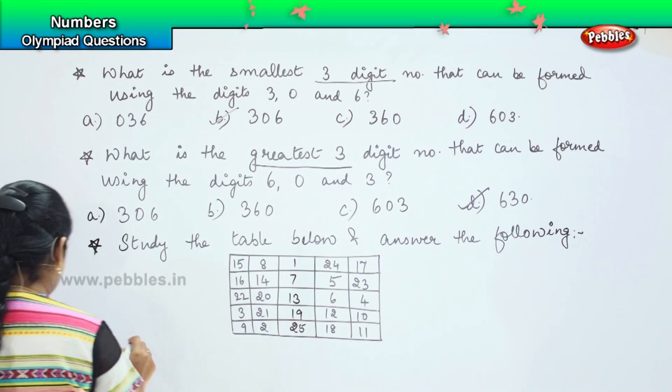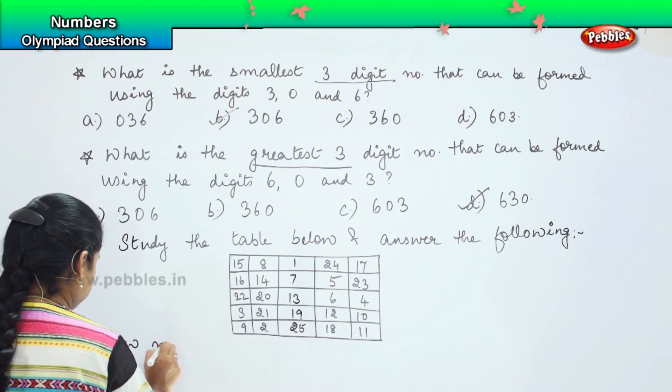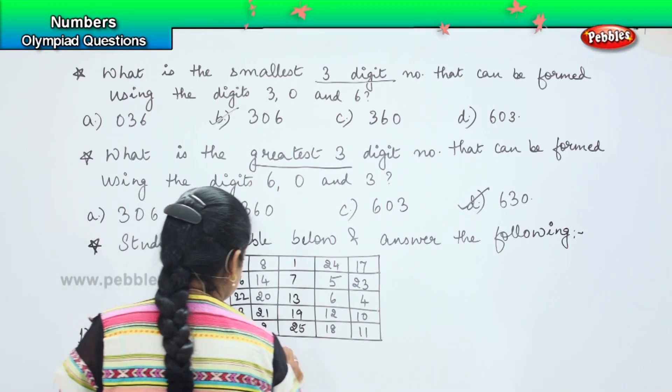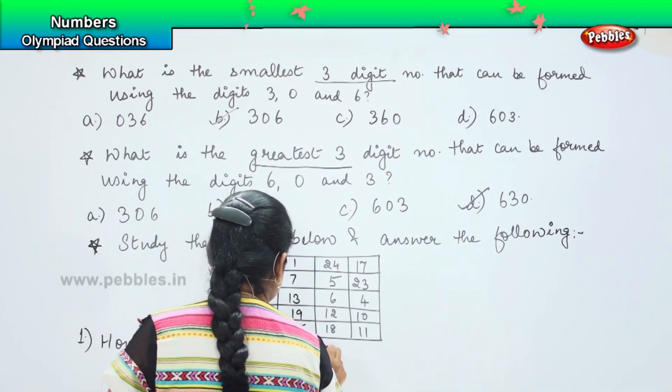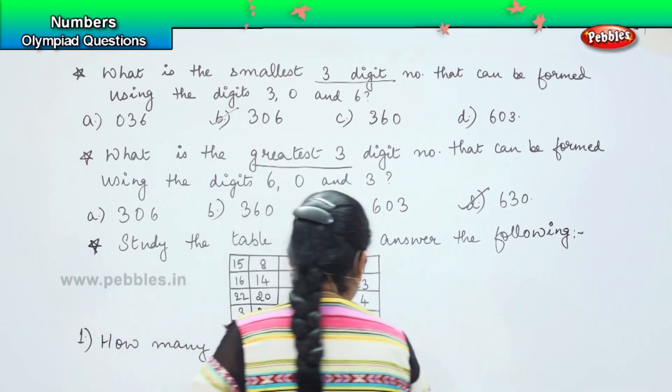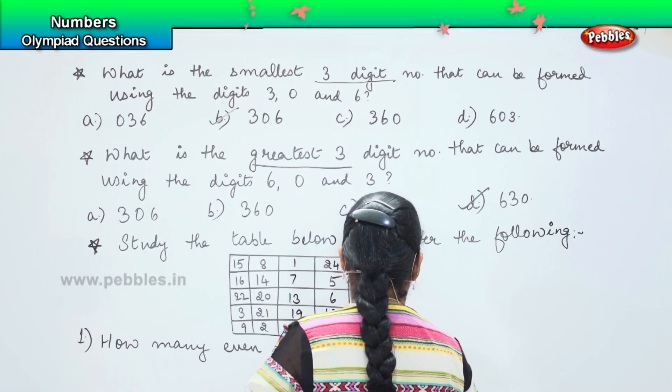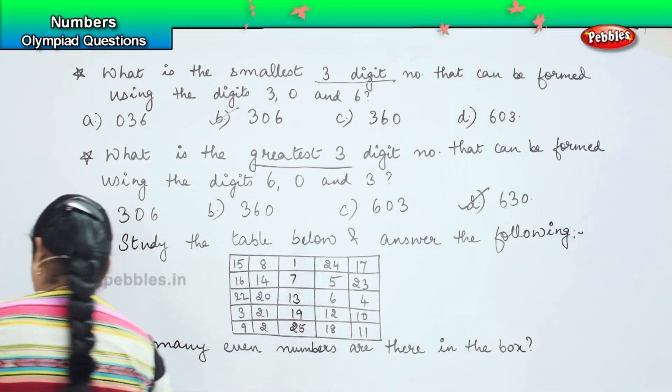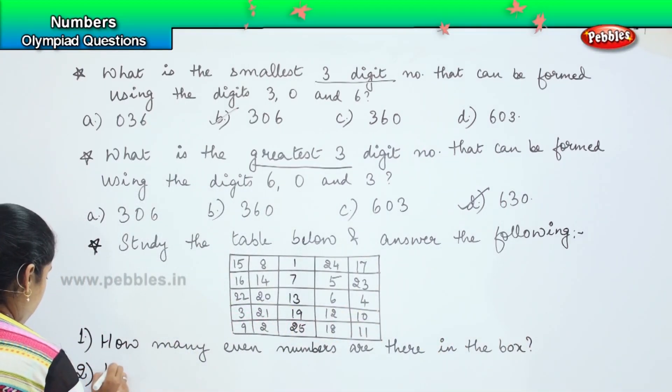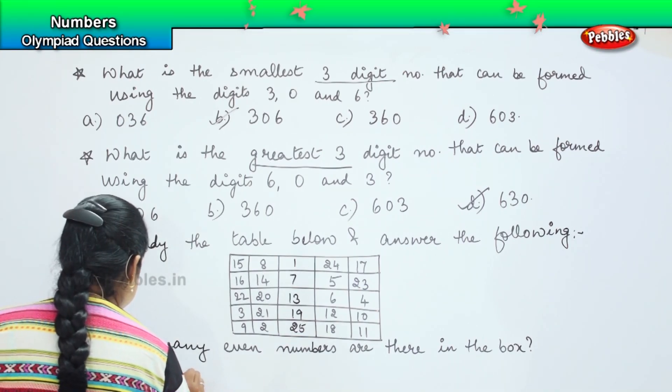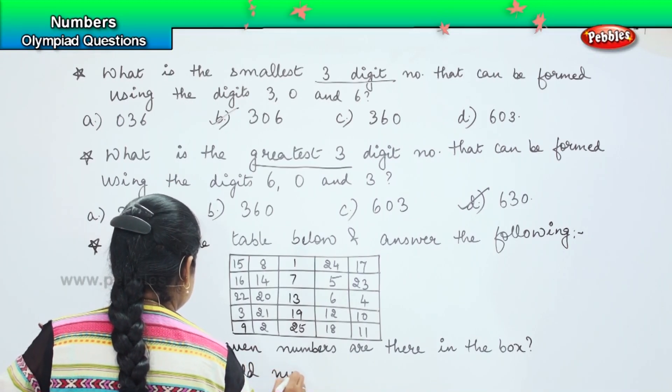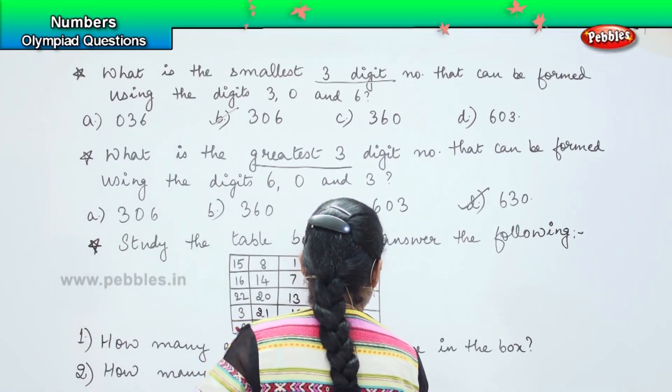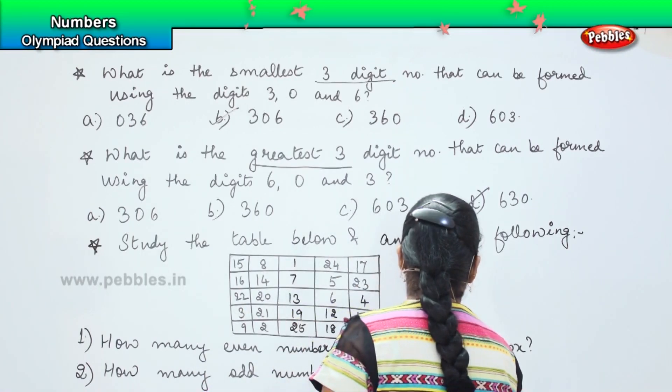How many even numbers are there in the box? And the second question is, how many odd numbers are there in the box?